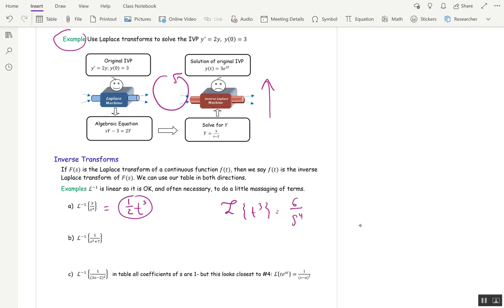For this next problem, we know from our table that L of sine bt is b over s squared plus b squared. So this is going to be a sine problem where b is the square root of 7. So we're going to have sine of the square root of 7t. But if we took L of that, we'd have a root 7 on top, so we're going to have to divide by 1 over root 7 here.